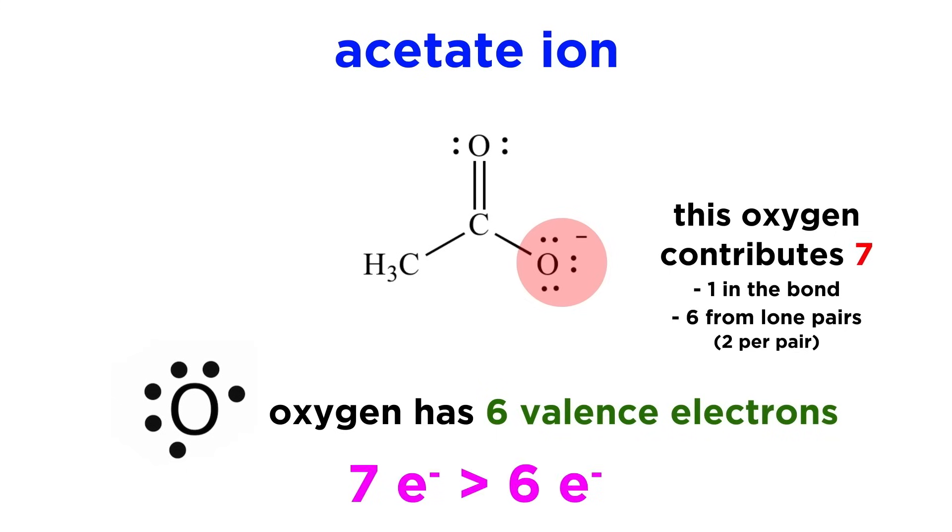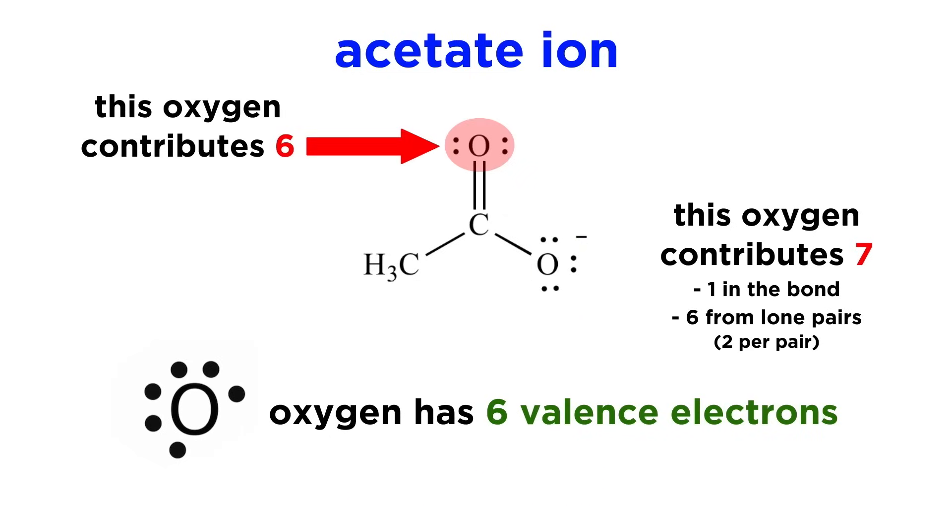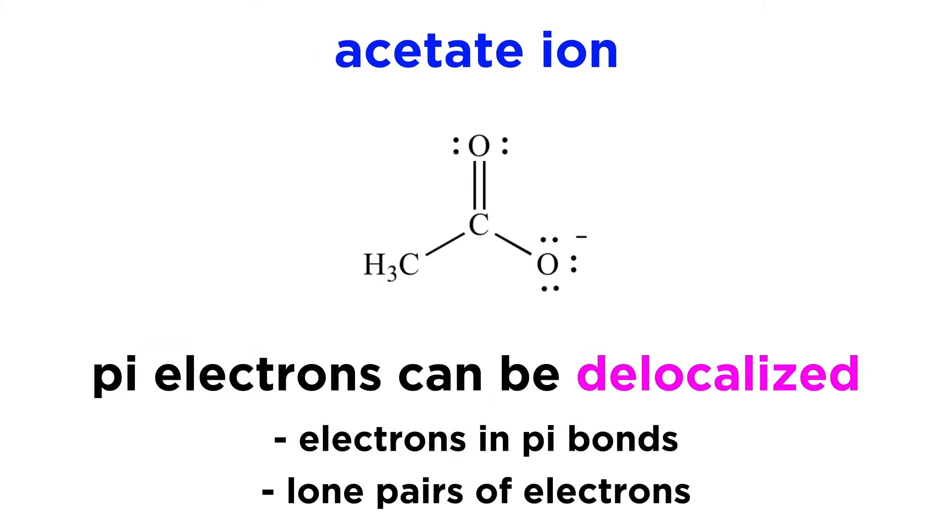7 is one more negatively charged electron than 6, so it bears a formal negative charge. The other oxygen is contributing 6, one from each of the two bonds and two lone pairs, so it is neutral.